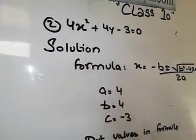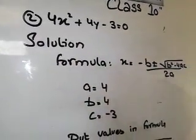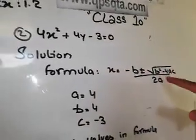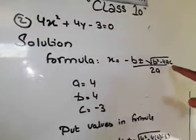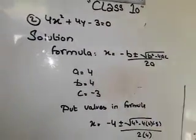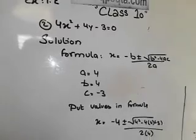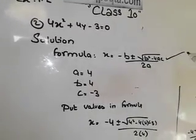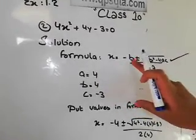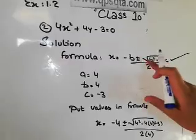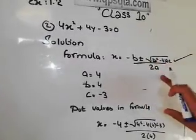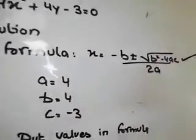We have written a formula — remember the formula: x = (-b ± √(b² - 4ac)) / 2a. This is our quadratic equation formula. Keep it in mind. Look at the quadratic formula: minus b plus-minus under root b squared minus 4ac upon 2a. Now what do we have?